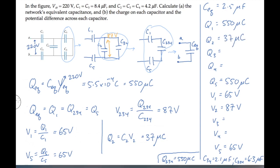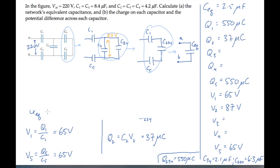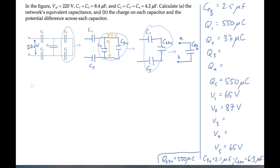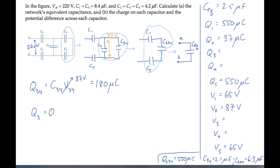Erasing again to deal with capacitors 3 and 4, we can start by calculating the charge on the equivalent capacitor C34. It works out to 180 microcoulombs. Then because capacitors 3 and 4 are in series, we know they must have the same charge. So Q3 equals Q4, which is 180 microcoulombs.